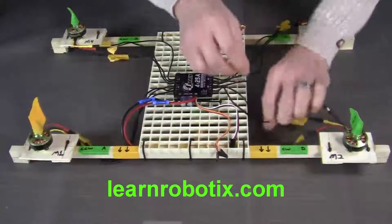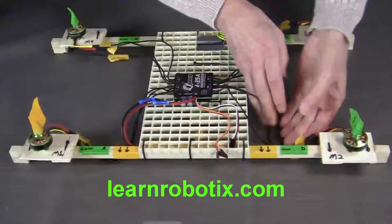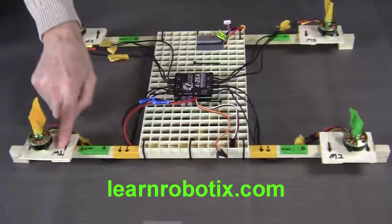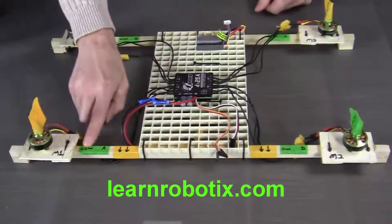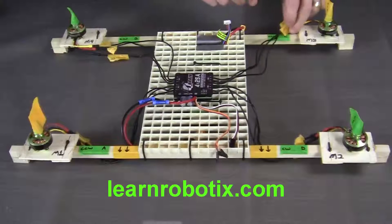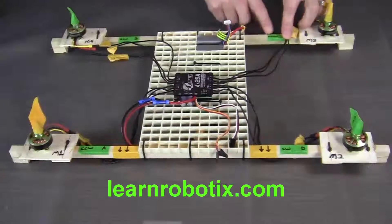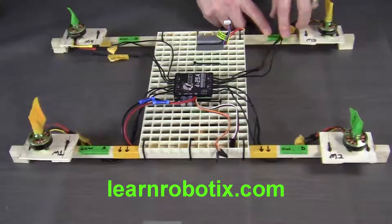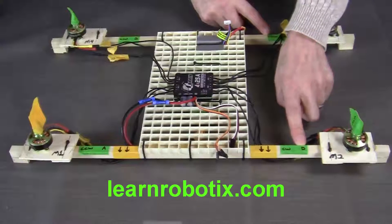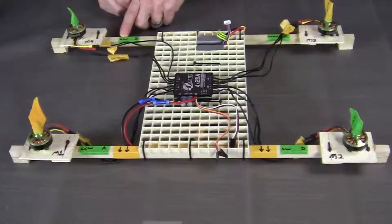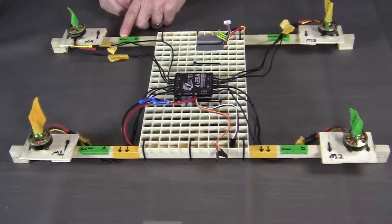So now what I have is M1 will rotate in a counter clockwise, M3 will also rotate in a counter clockwise rotation, M2 will rotate in a clockwise rotation, M4 will also rotate in a clockwise rotation.